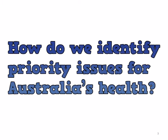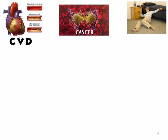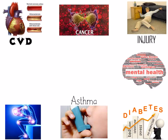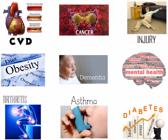Australia is one of the healthiest countries in the world. However, there are still a number of health problems that the population experiences. The challenge for the Australian government is to allocate a limited amount of resources to address these health problems, which means priorities need to be established. Currently we have nine national health priority areas: cardiovascular disease, cancer, injury, mental health, diabetes, asthma, arthritis and musculoskeletal disorders, obesity, and dementia.